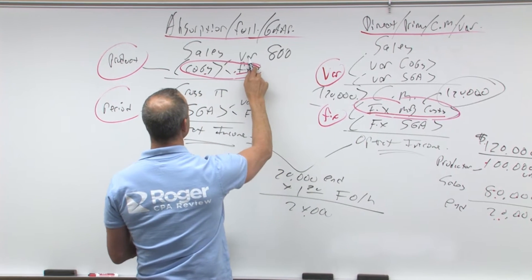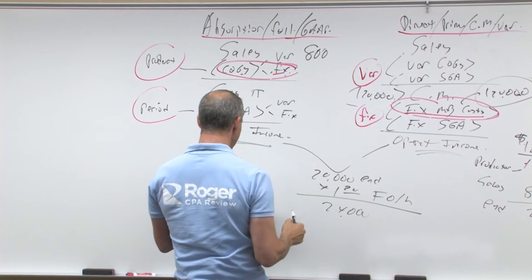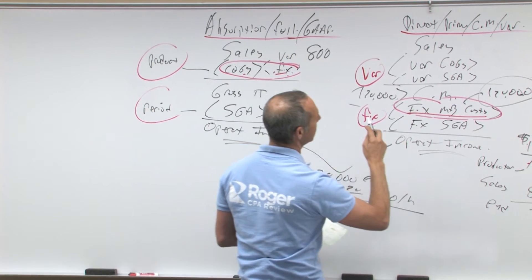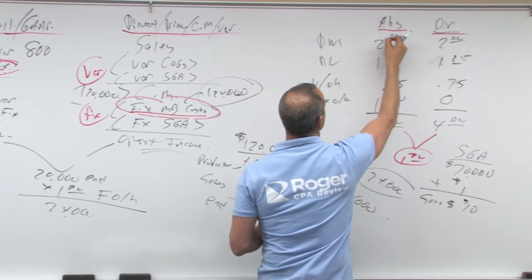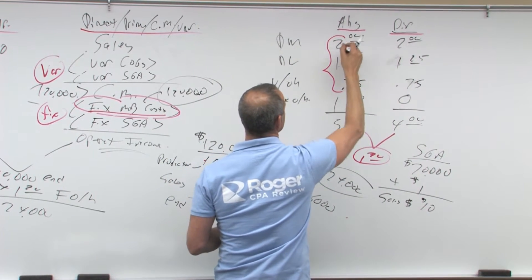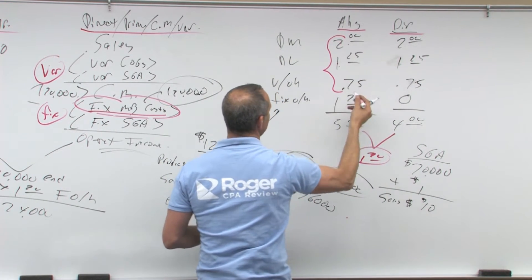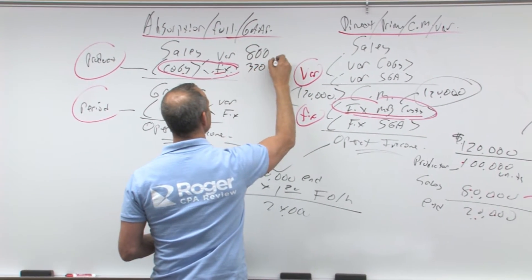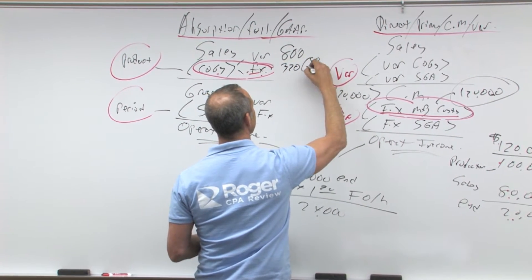How much are my variable costs of goods sold? Variable costs of goods sold are gonna be, let's see, this plus this plus this, two, three, four dollars, four times 80, eight times four is 320, and that's eight times four.